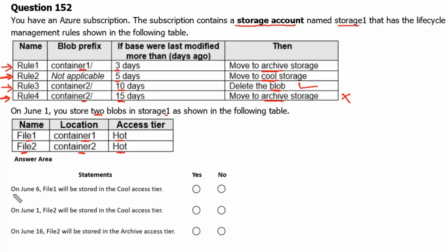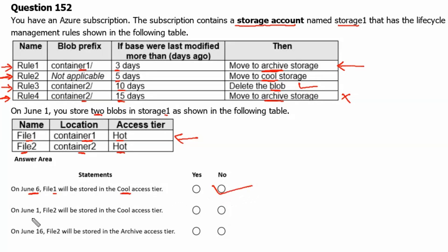Statement 1: On June 6th, file 1 will be stored in cool access tier — yes or no? File 1 is stored in container 1, so rule 1 applies. After 3 days from June 1st, it will be moved to archive storage, not cool. Therefore, the answer is no.